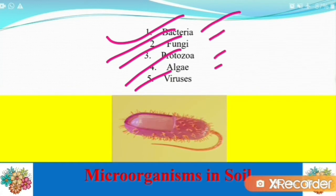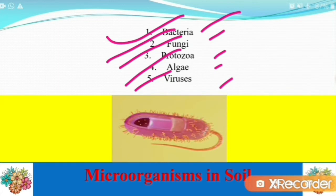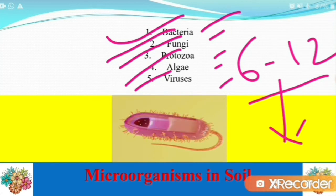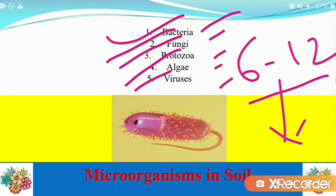A spoonful of soil contains billions of microorganisms. In general, the majority of microbial population is found in the upper 6 to 12 inches of the soil, and the number decreases with depth. The number and kinds of organisms found in the soil depend on the nature of soil, depth, season of the year, state of cultivation, organic matter, temperature, moisture, and other factors.